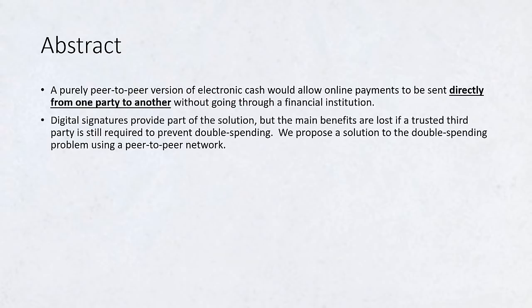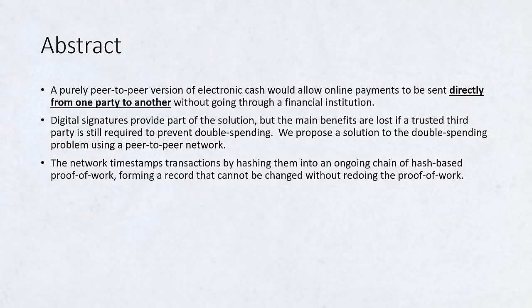Digital signatures provide part of the solution, but the main benefits are lost if a trusted third party is still required to prevent double spending. We propose a solution to the double spending problem using a peer-to-peer network. The network timestamps transactions by hashing them into an ongoing chain of hash-based proof of work,